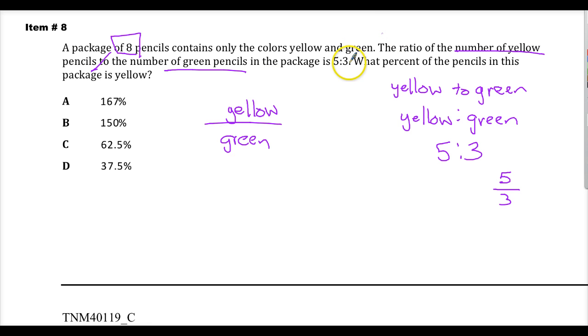Now, that's the ratio in a package that contains eight. Well, you'll notice, conveniently, that five plus three is eight. So, they're telling you about every single one in there. You don't have to scale it up or scale it down, which is kind of nice of them to do. So, based on this, I know that there are five yellow pencils to three green pencils.